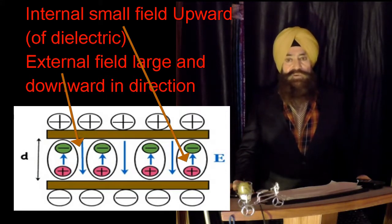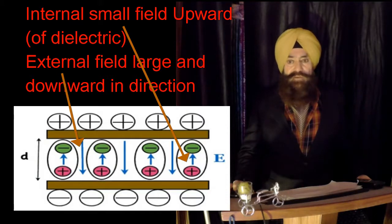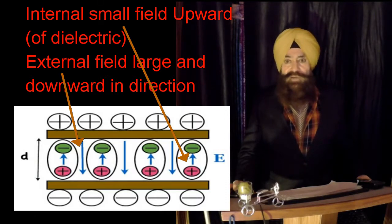Now, there are two electrical fields, positive to negative, which is external, and the other is the internal field of the dipoles, again positive to negative. What is the resultant field? Resultant field becomes external field minus the internal field, and this field will be reduced.